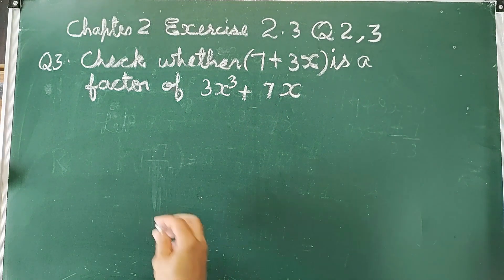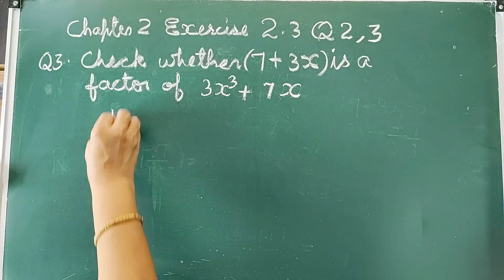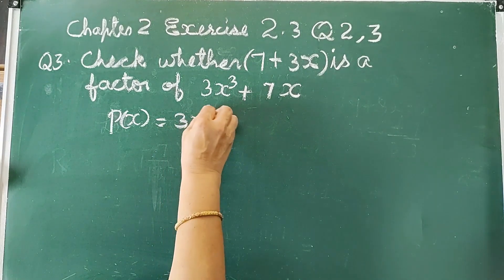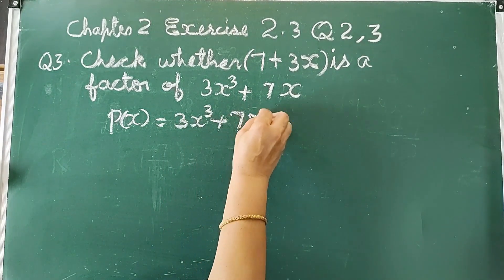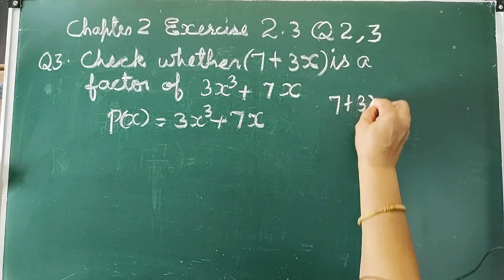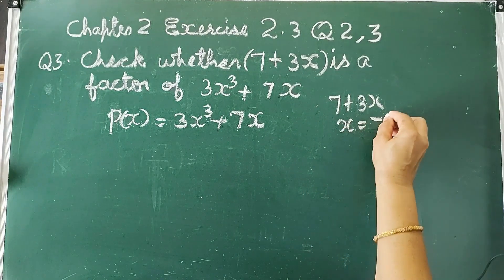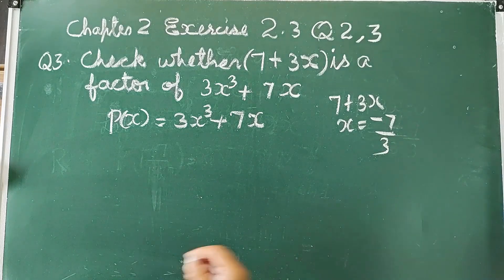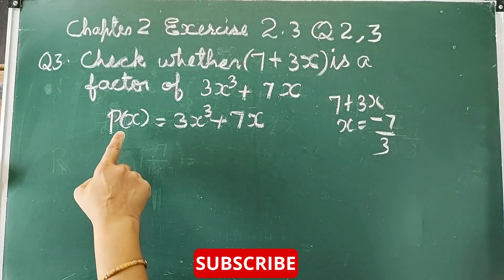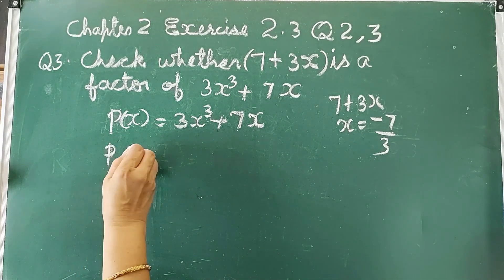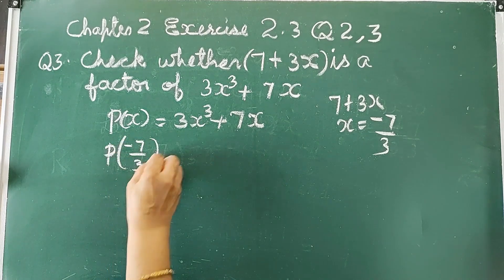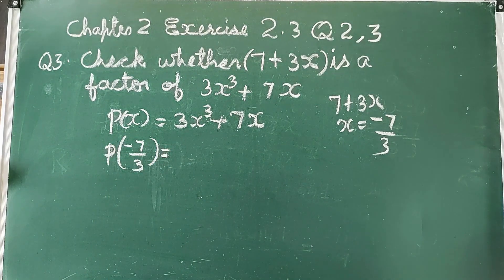So, let us consider this polynomial as p(x). p(x) is equal to 3x³ plus 7x. From the factor 7 plus 3x, we can find the value of x, that is minus 7 by 3. So, putting x equal to minus 7 by 3 in p(x), we get p(-7/3) as the remainder.